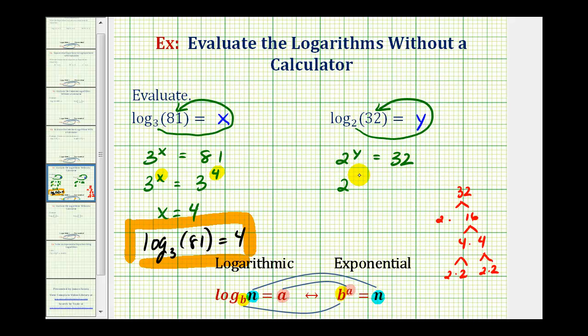So 2 to the power of y equals 2 to the fifth. And again, these are equal, the bases are the same, so the exponents must be equal, and therefore y is equal to 5. Which means our logarithm is equal to 5. So we have log base 2 of 32 equals 5.